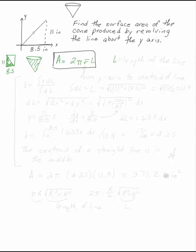where l is the length of the line, and r̄ is the distance from the axis of revolution to the centroid of the line. This goes from the y-axis to the centroid of the line. Well, we have to figure out what the centroid of the line is.